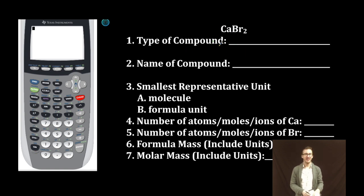First thing we want to do is identify this compound as an ionic one. We identify it as ionic because it consists of a metal and a nonmetal.